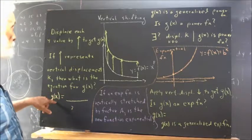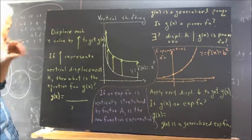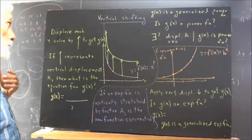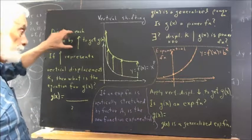Okay, what's the equation for G of X in this situation, where we've vertically displaced each value, Y value, by displacement K?